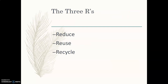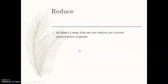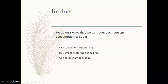Three R's — you've probably been learning about these since elementary school, but we're just going to run through them. Reduce: a big thing in reduce is source reduction. Source reduction means you are cutting waste by cutting from the beginning of the manufacturing process — use less packaging, substitute less impactful materials, and when reducing waste or changing materials, we must take into account other resources used in production. Source reduction can look like going from a toxic material to a non-toxic material. Three ways to reduce consumption: using reusable shopping bags so you're not getting new plastic or paper ones, buying goods with less packaging, and using solid shampoo.